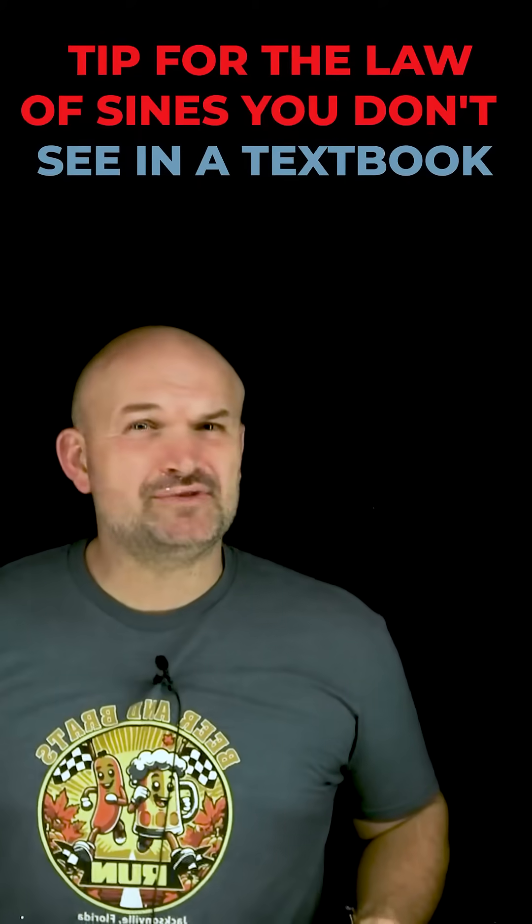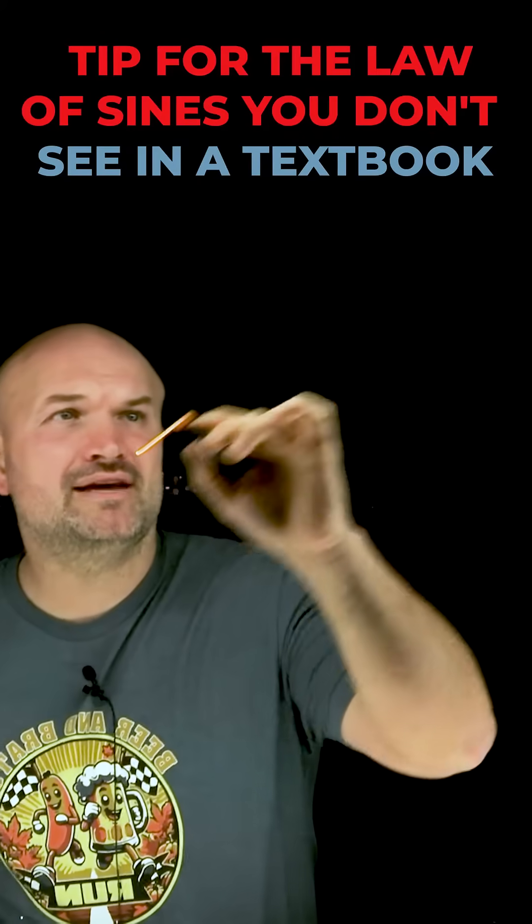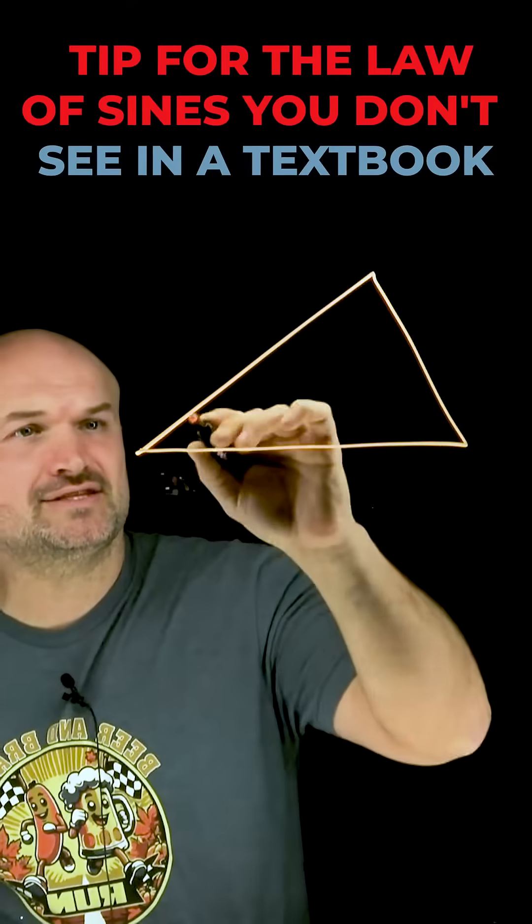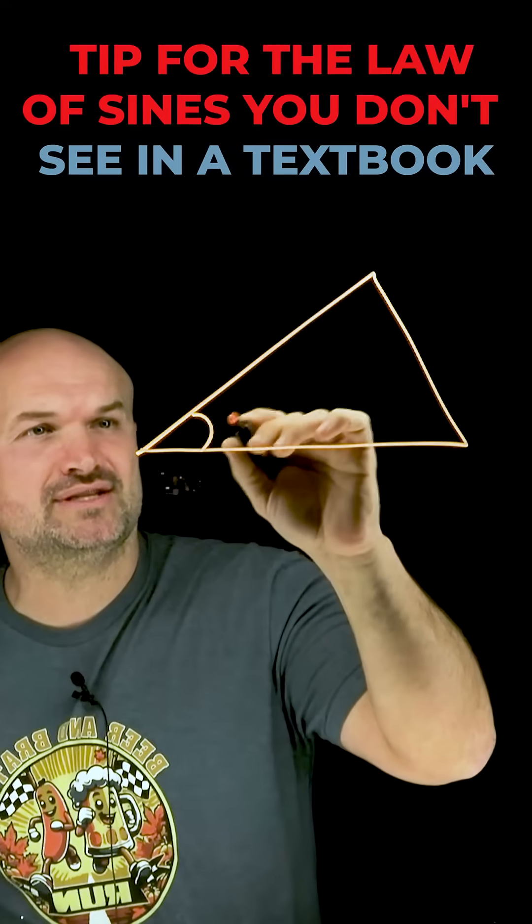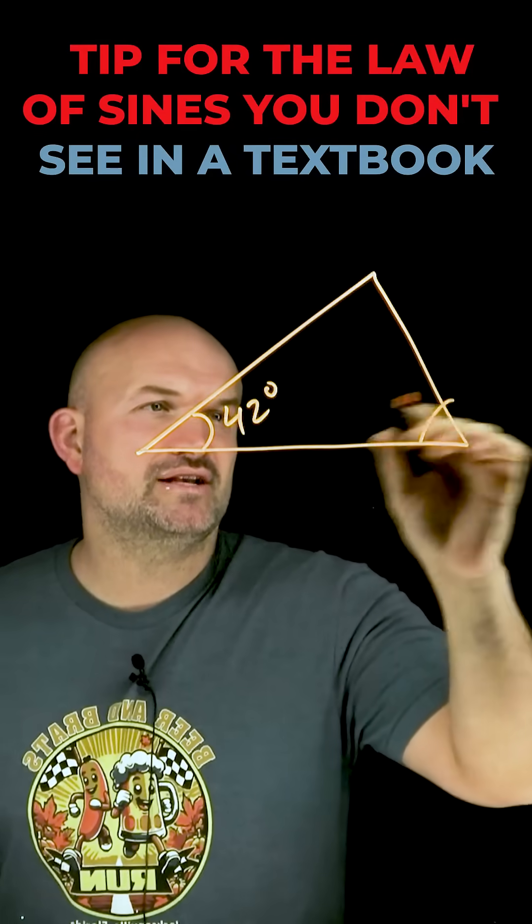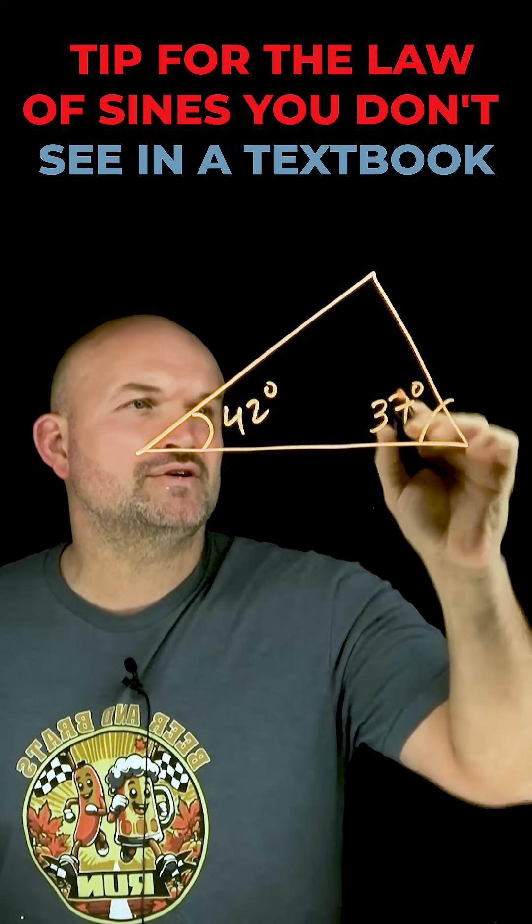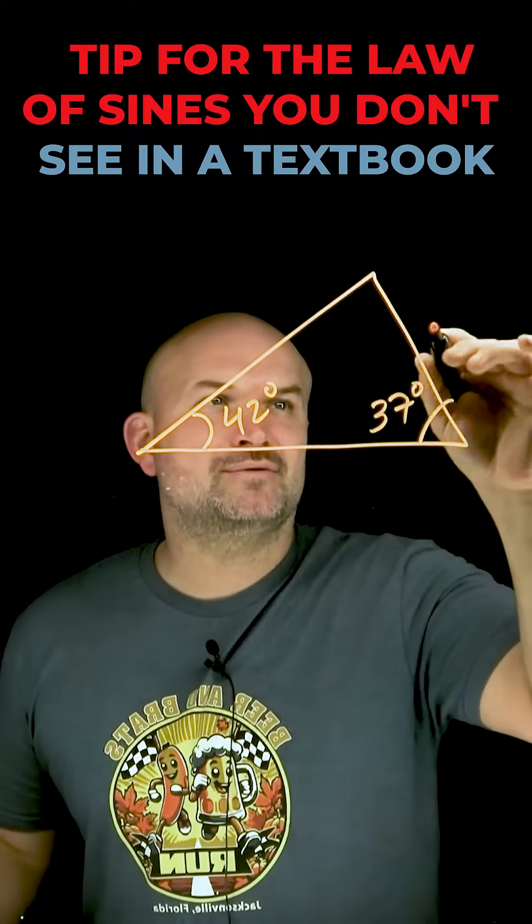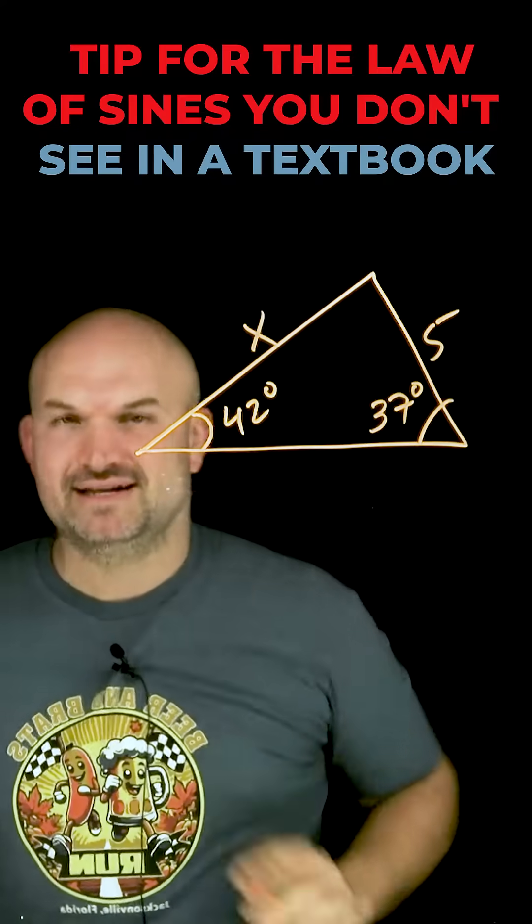Here's a tip for the law of sines that a lot of times you don't see in a textbook. If you are given a triangle, let's say this angle is 42 degrees, you're given another angle which is 37 degrees, and then you're given this side length which is 5, and we want to be able to find this side length.